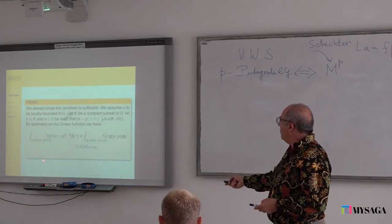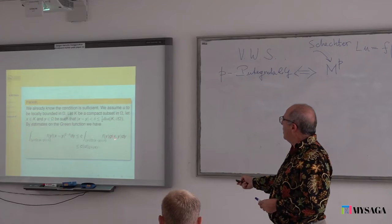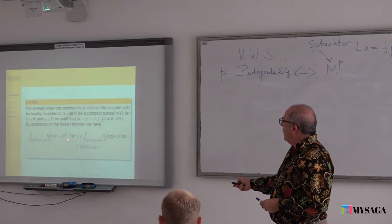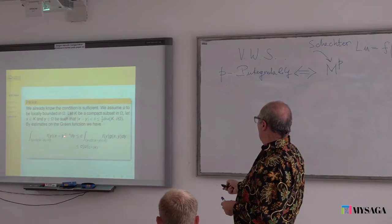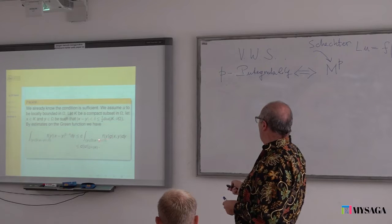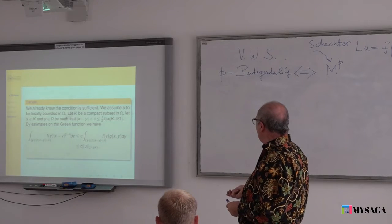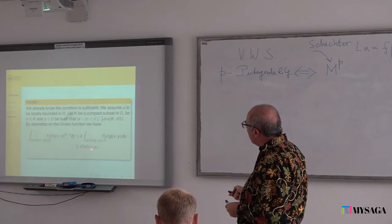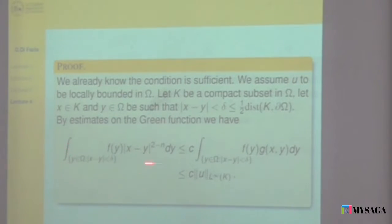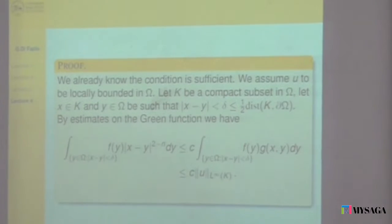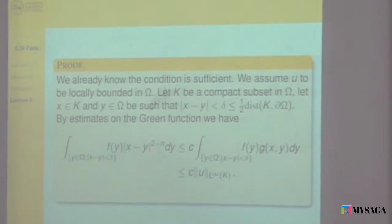As before, this is always symmetric. I use the estimate for the Green function from below, and then I have this comparison. If U is bounded by this inequality, the corresponding condition is obtained. In general, I am not going to be more precise. So this is the condition of boundedness.